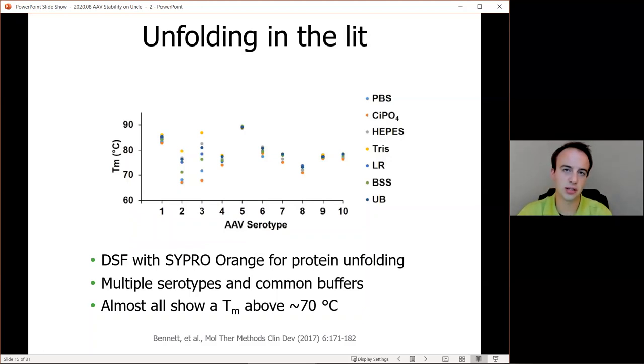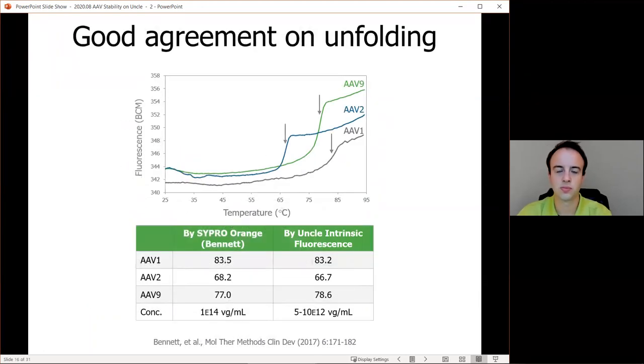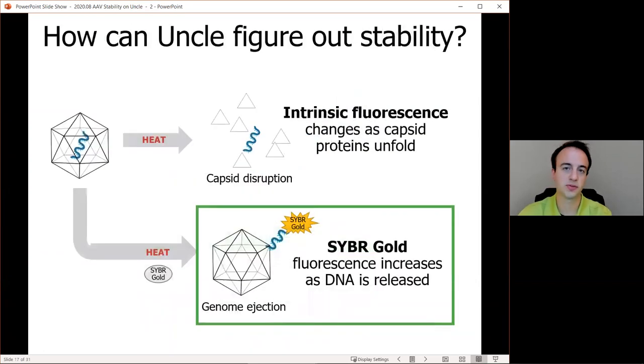So there's both a capsid engineering and selection question that can be addressed with this, as well as formulation questions. If we compare UNCLE's results to those results by Bennett, we have an idea of how that intrinsic fluorescence data matches up with that dye-based fluorescence used in the literature. So here we're looking at AAV serotypes 1, 2, and 9 that have dramatically different intrinsic fluorescence melting temperatures, and you can see the differences across the serotypes, both at the top and shown at the bottom of the table. You can also see in the table the comparisons between the UNCLE data and the Bennett data line up very nicely, and then any differences can be attributed to using a dye versus intrinsic mode of fluorescence or differences in the buffer.